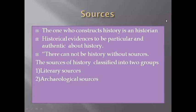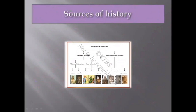Next — sources. Sources means evidence. The person who constructs history is called a historian. Historical evidence should be particular — meaning correct information — and authentic — meaning genuine information. There cannot be history without sources. Without sources, it is not history. Sources of history are classified into two groups: literary sources and archaeological sources.